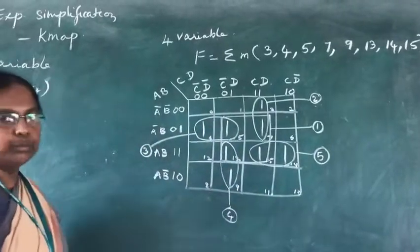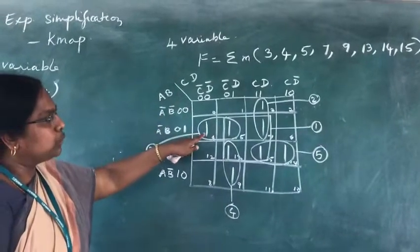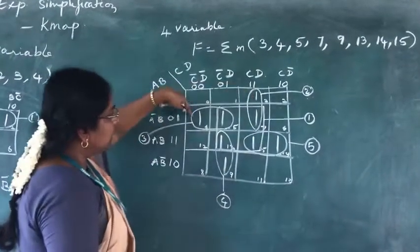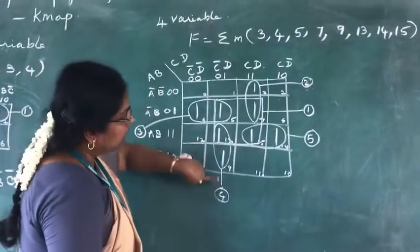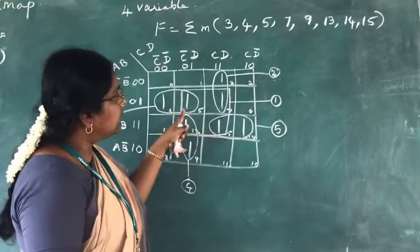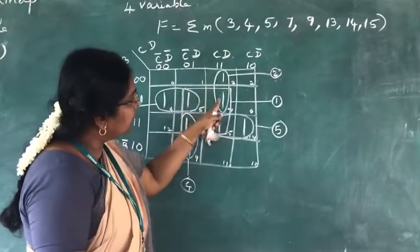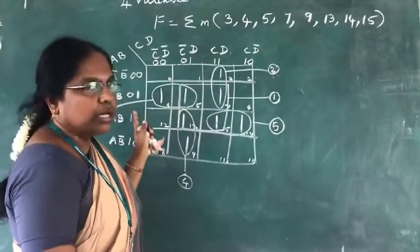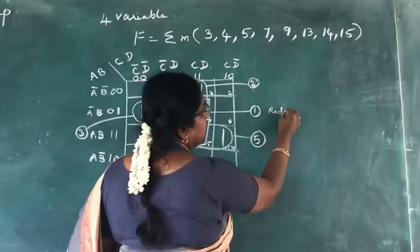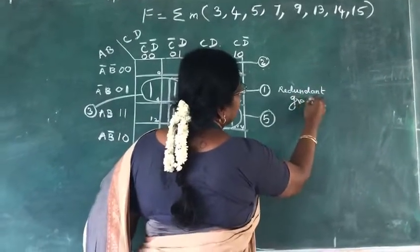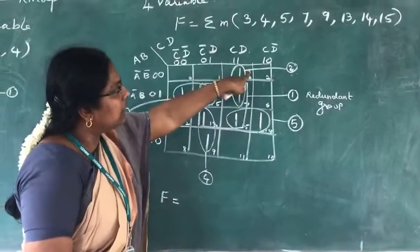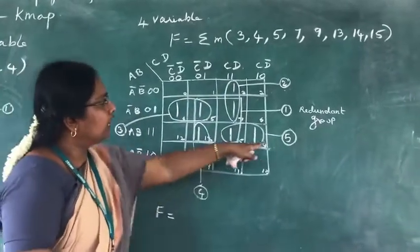We have formed 5 groups. The condition is that for every group, there should be at least one unique 1. Group 2 has min term 3 unique to it; group 3 has min term 4 unique; group 4 has min term 9 unique; group 5 has min term 14 unique. However, group 1 has no unique min term — every min term in it appears in other groups — so group 1 is redundant and can be eliminated.